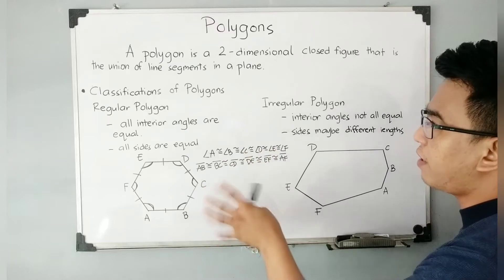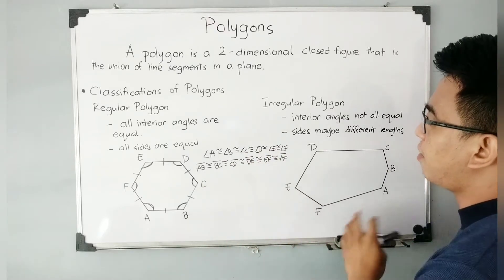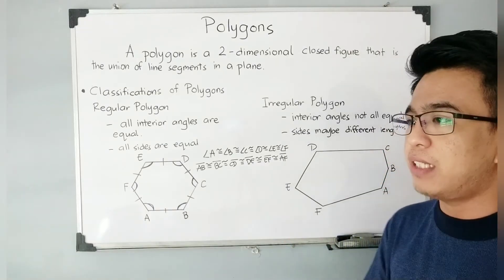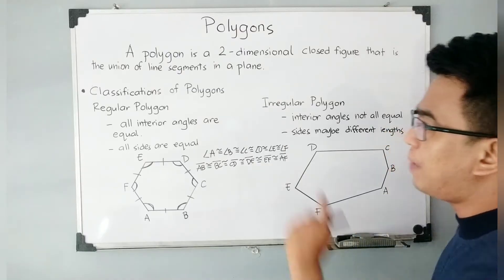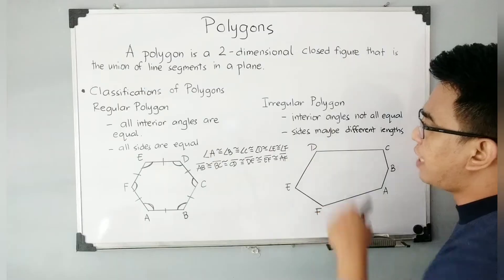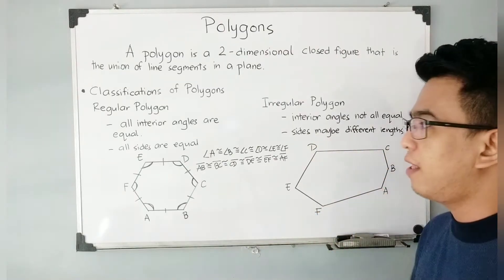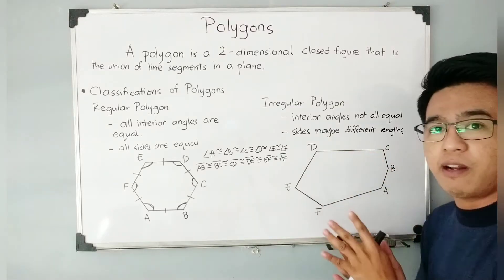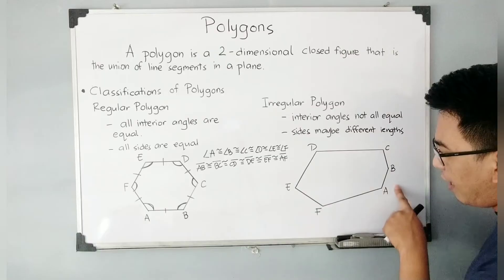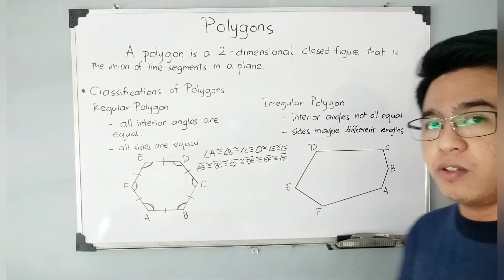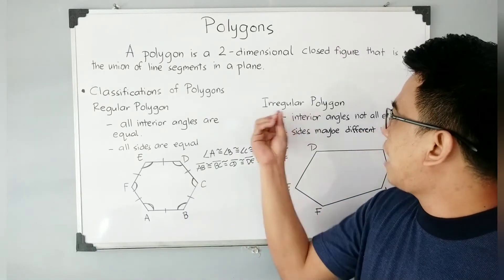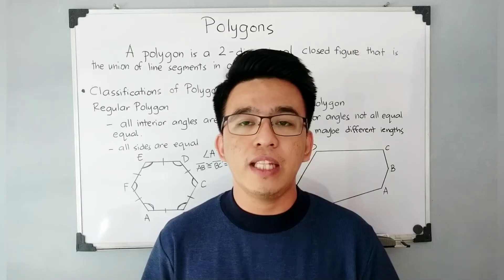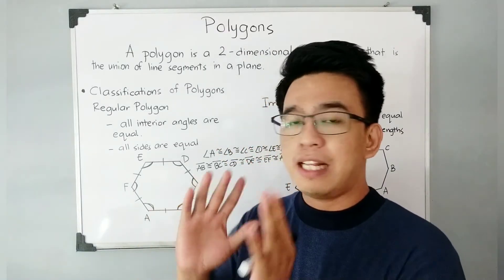If those are the characteristics of the regular polygon, then the characteristics of our irregular polygon are the opposite. When I say irregular polygon, the interior angles are not all equal — it's possible that two or three angles are equal, but not all of them. Aside from that, the sides may be different in terms of length. As you can see in the example of the irregular polygon, DC is longer than CB, AB, FA, and EF. In other words, the characteristics of the irregular polygon are the complete opposite of those of the regular polygon.